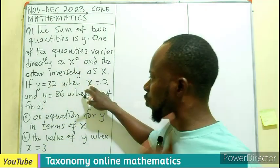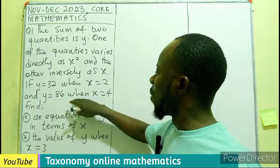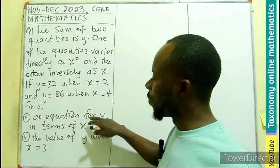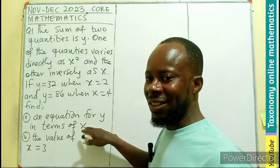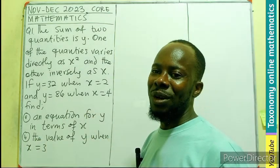when X is 2, and the value of Y is 86, when X is 4, we have to find an equation for Y in terms of X, then find the value of Y when X is 3.